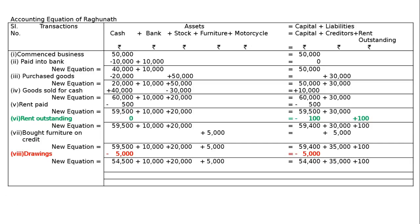Ninth transaction: purchased motorcycle for cash Rs. 20,000. Since nothing is specified about personal use, the motorcycle is assumed to be for office use. Hence minus from cash and add to motorcycle Rs. 20,000. This is an official motorcycle.